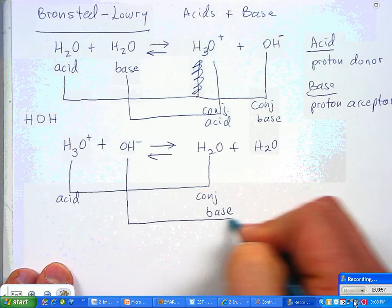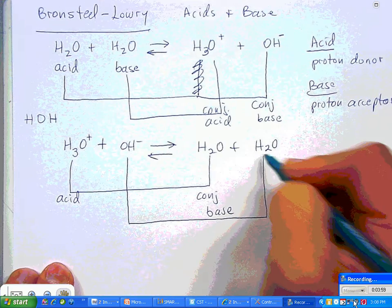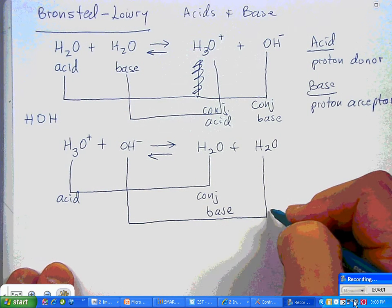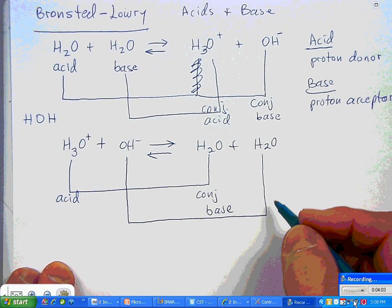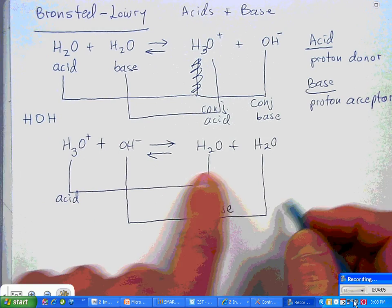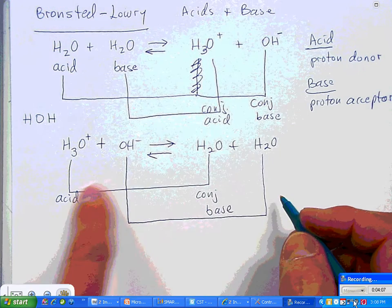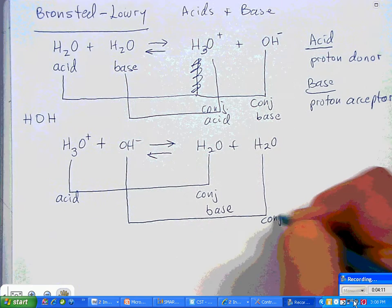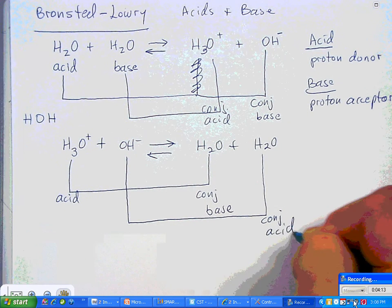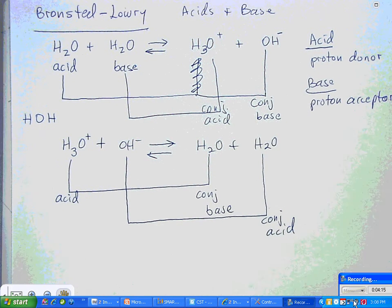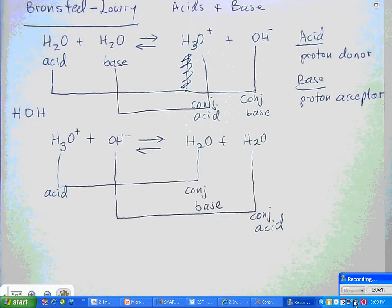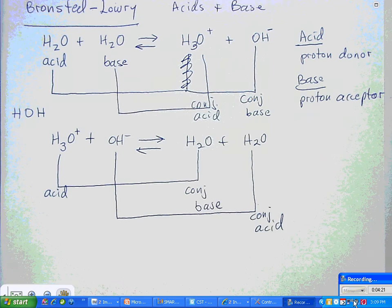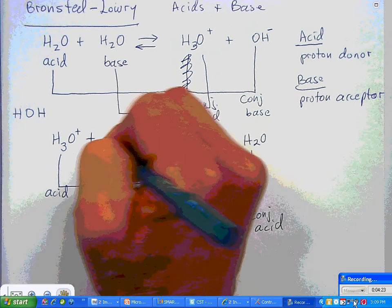And this is the conjugate base. This guy is going to be the acceptor. And he becomes... Wait a second. This acid. This is the conjugate base. This guy is the base. And here's his conjugate acid. Yeah. That works. Here's the conjugate acid. And now you can see exactly how this guy works. Base. Let's call this guy the base.